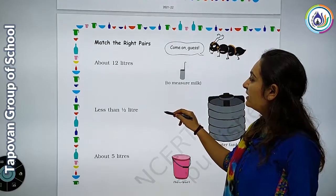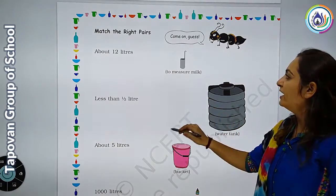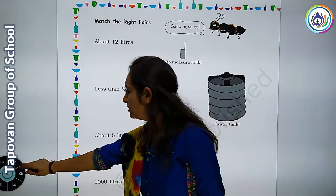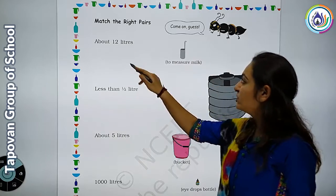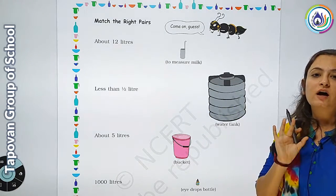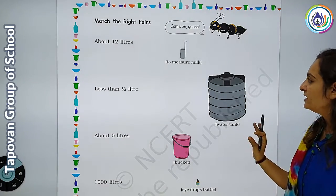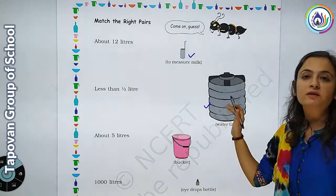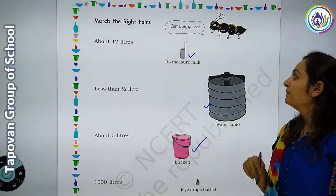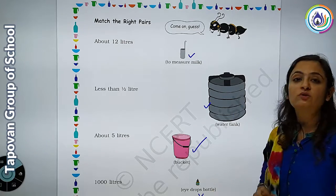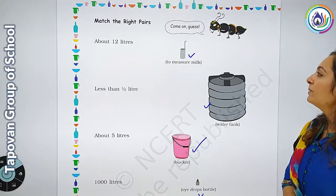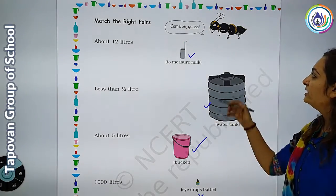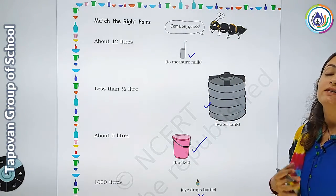Moving to the next page, here is the 'Match the Right Pairs' activity. You have to match the pairs correctly. Think about the measurements. What is the liquid? This is milk, this is water. How much water can you add? The water is in the eye drops. You have to measure — guess through it. Come on, guess!